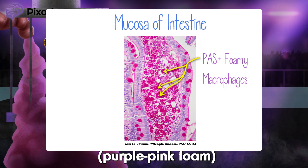So why is this happening? The macrophages actually have Tropheryma whipplei inside them, and the PAS stain is picking up on the glycoproteins in the cell wall of the bacteria. This is high-yield — the finding of PAS-positive foamy macrophages in the lamina propria is a hallmark of the disease. If you can only remember one thing from this video, this should be it.